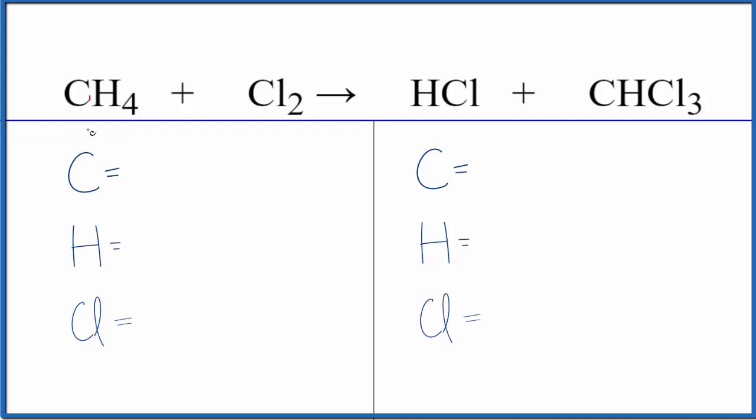First, we count the atoms up. One carbon, four hydrogens, and then two chlorine atoms. Product side, we have carbons, we have one of those.